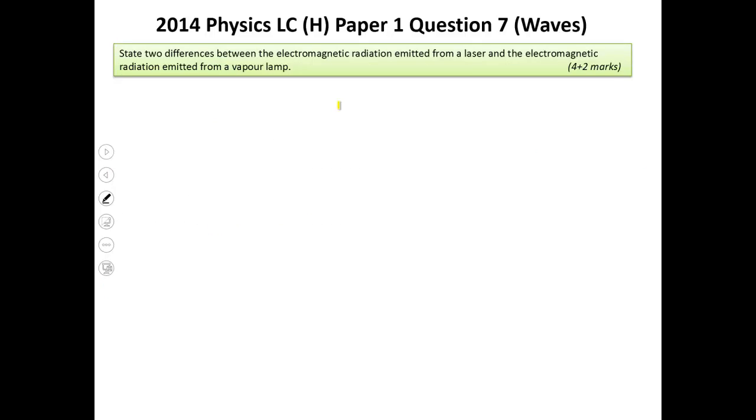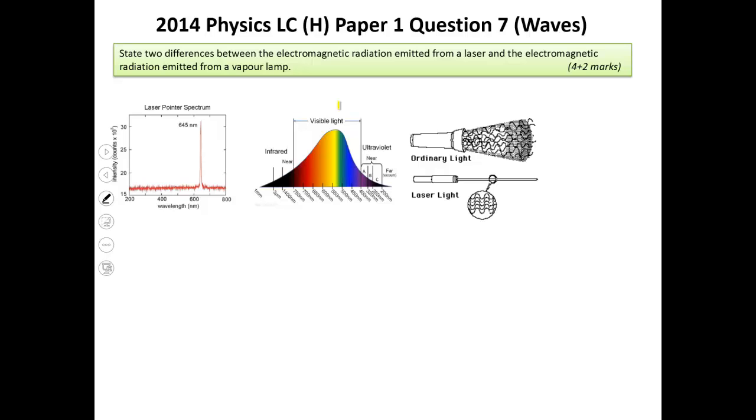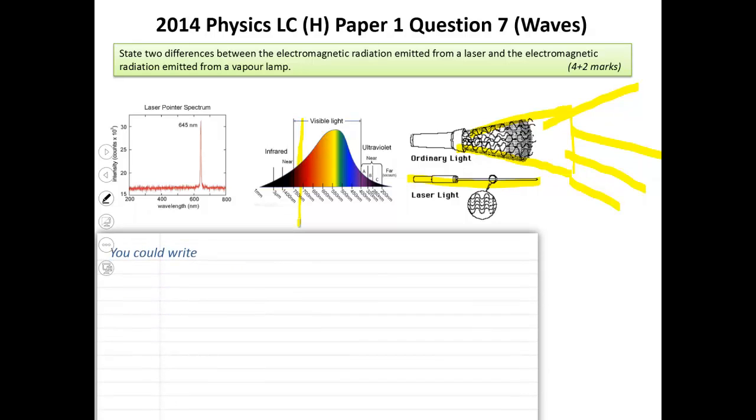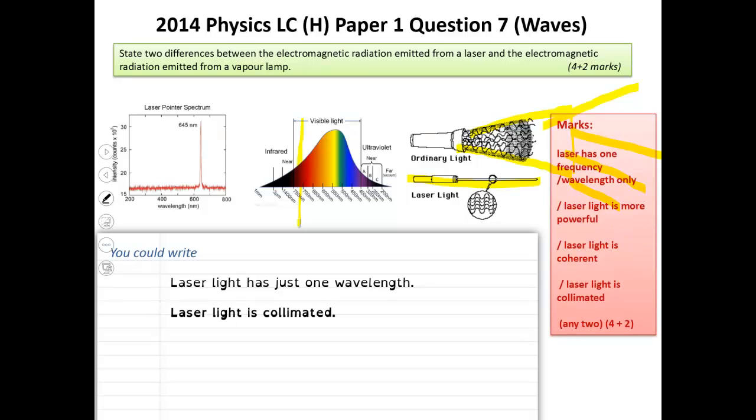Two differences between electromagnetic radiation from a laser and from a lamp. Well, from a laser, it goes in a nice straight line like this, lamp, it just sort of goes all over the place. You can also say that, let's say if I got an infrared laser, that would just be one tiny slice of the spectrum, whereas white light is the whole full spectrum. So you could write here, laser light has just got one wavelength, and you could say also laser is collimated.